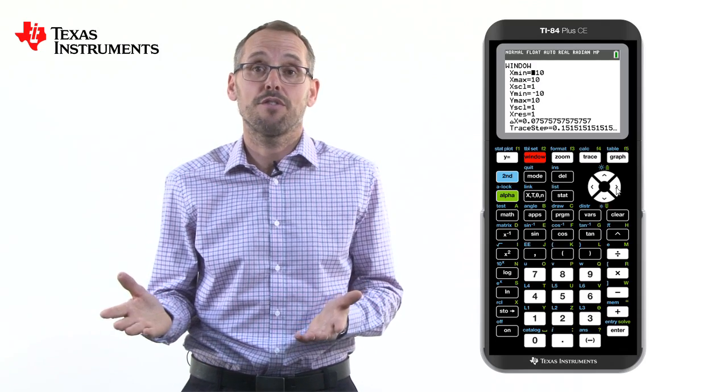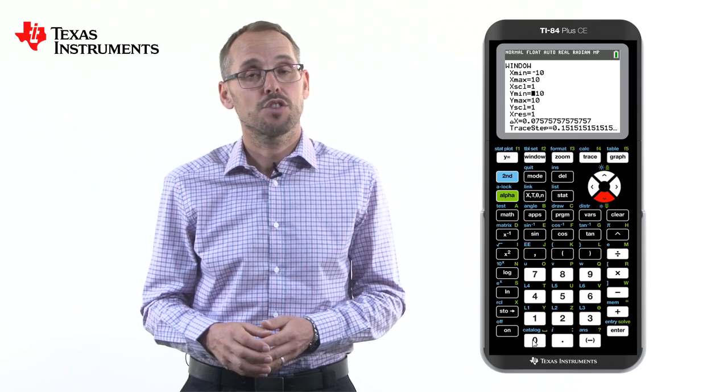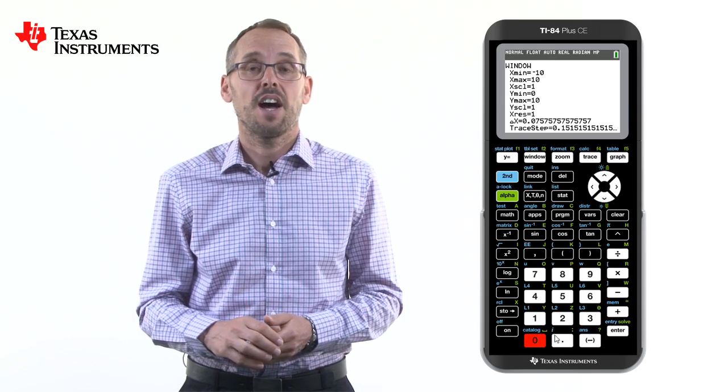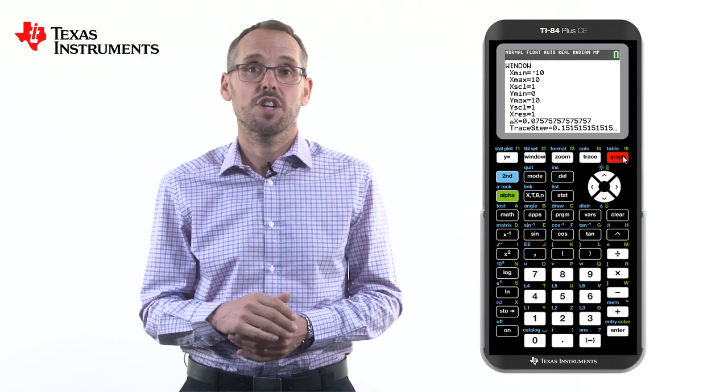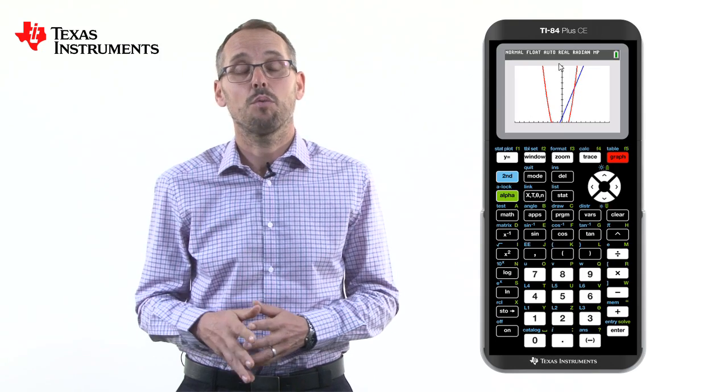For example, if we only wanted to show the first two quadrants, we would change the y minimum to zero. And then when we press graph, it only shows the axes from minus ten to ten on the x-axis and zero to ten on the y.